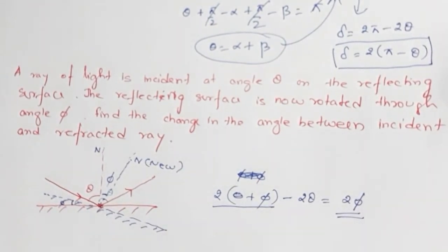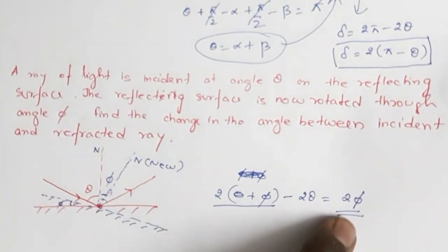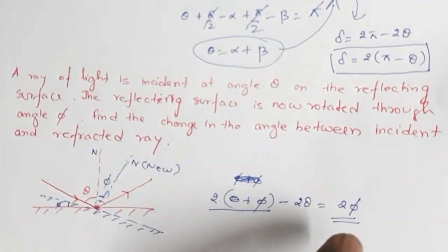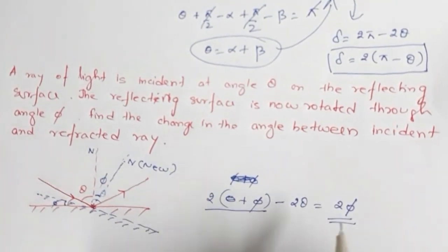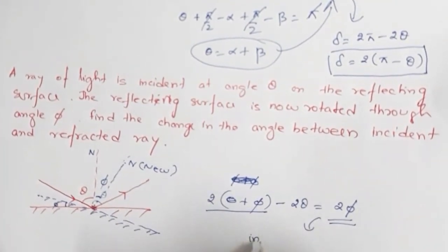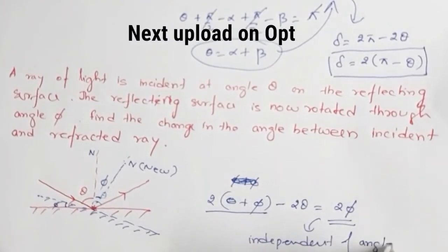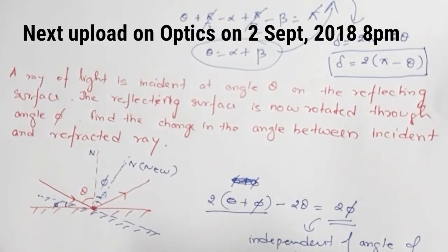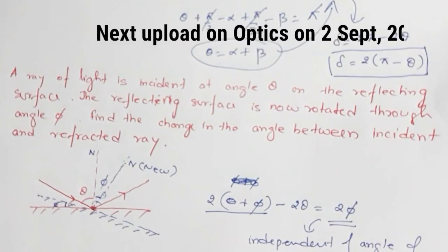So if the mirror is rotated through angle phi, the reflected ray gets turned by an angle of 2 phi. This is also quite interesting — this rotation of the ray is independent of the angle of incidence. I hope this concept is clear to you. Before we proceed to the next concept, thank you.